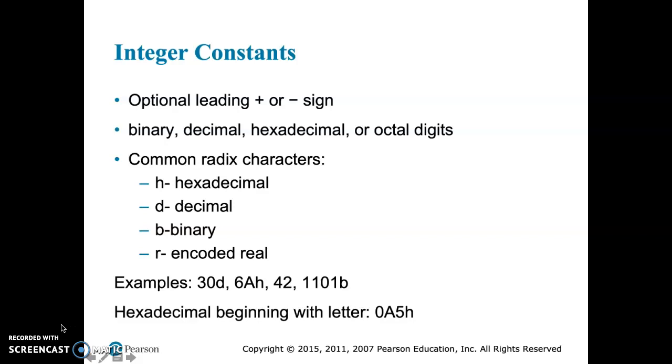If the hexadecimal number begins with a letter, we have to preface it with a zero. Otherwise, it will actually throw an error when the code is run. The assembler, if it's a zero, interprets the zero as an identifier instead of the number itself.